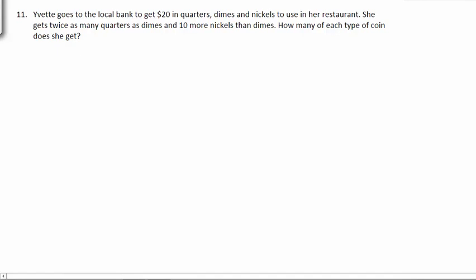Number 11. Yvette goes to the local bank to get $20 in quarters, dimes, and nickels to use in her restaurant. She gets twice as many quarters as dimes and 10 more nickels than dimes. How many of each type of coin does she get?